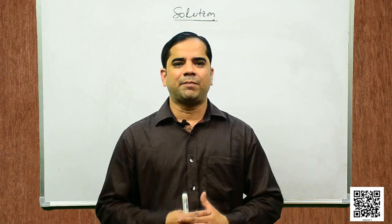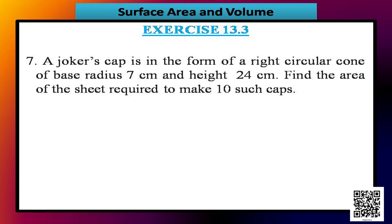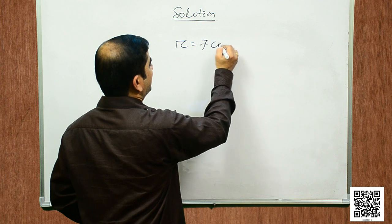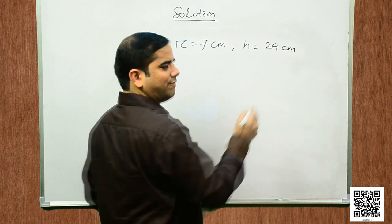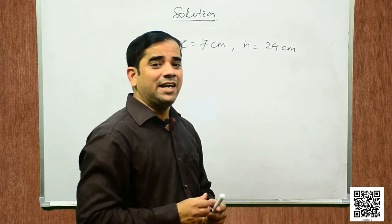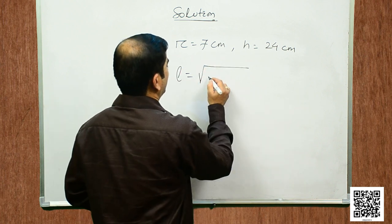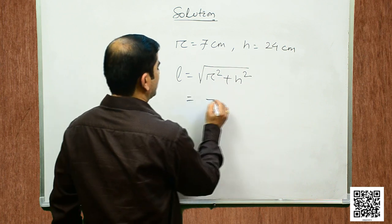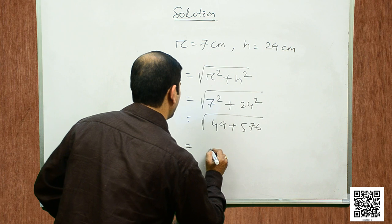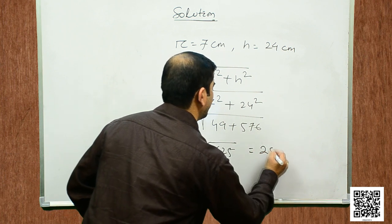Let us now solve question number 7. It says: a joker's cap is in the form of a right circular cone of base radius 7 centimeters and height 24 centimeters. Find the area of sheet required to make 10 such caps. The base radius r = 7 cm and height = 24 cm. Let us find the slant height: l = √(r² + h²) = √(7² + 24²) = √(49 + 576) = √625 = 25 centimeters.